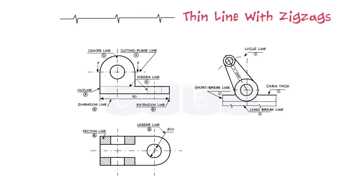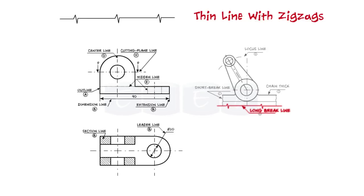Next is the continuous thin line with zigzags. This line is used to show long break.